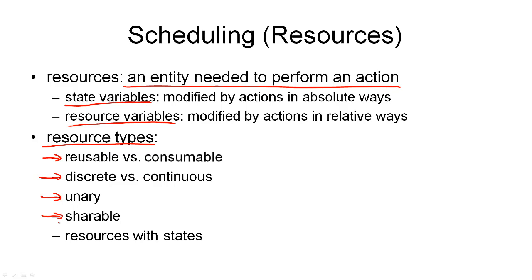An example of a shareable resource would be a generator that generates electricity for us. Another complication is that resources can have states. For example, if we have a generator that can produce different voltages as output but only one voltage at a time, it is in a specific state producing a specific output. All actions that need the resource in that state can use it in parallel, but actions that need it in a different state cannot use it at the same time. As you can see, there are many different types of resources, and often we require a combination of resources to execute an action — all of which must be taken into account by a scheduling algorithm that assigns resources to actions.